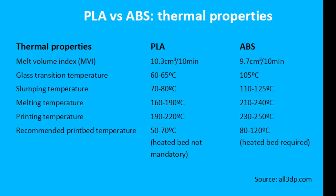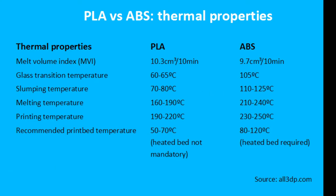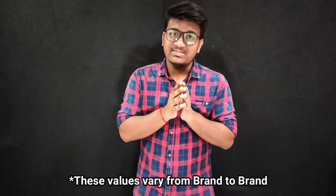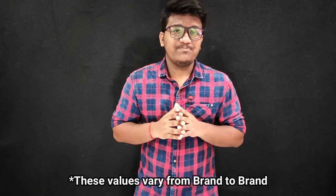PLA has a glass transition temperature of 60 to 65 degrees Celsius and a melting temperature of about 170 degrees Celsius, whereas ABS has a glass transition temperature of 105 degrees Celsius and a melting temperature of about 230 degrees Celsius. These values are based on the filaments used and also depend on the brand you choose.